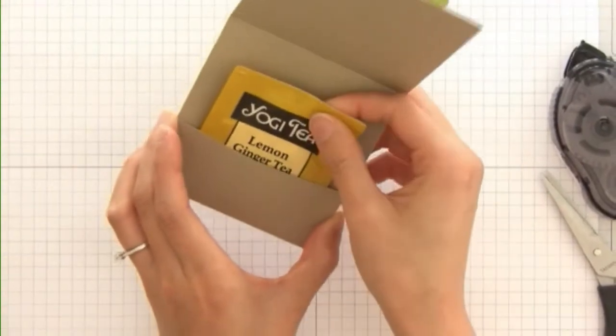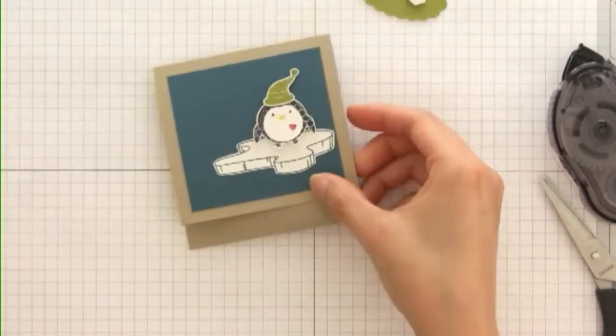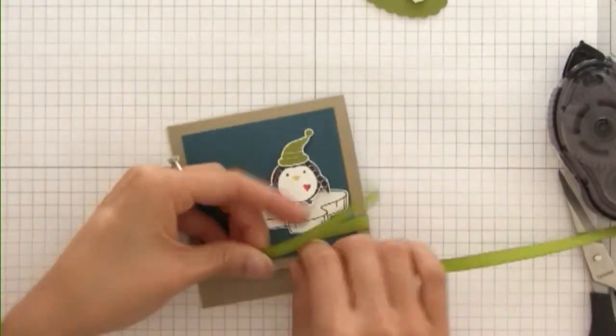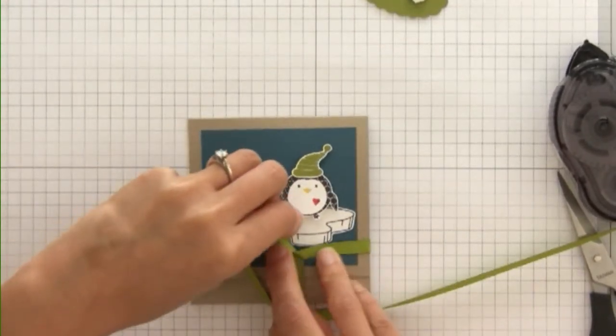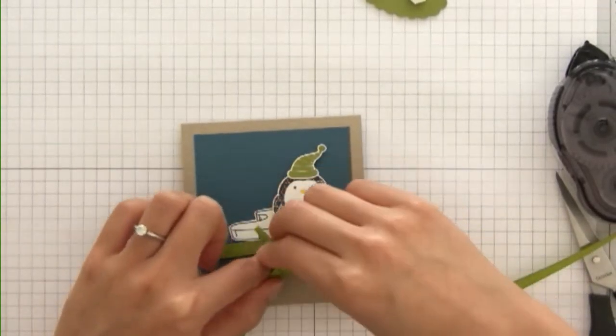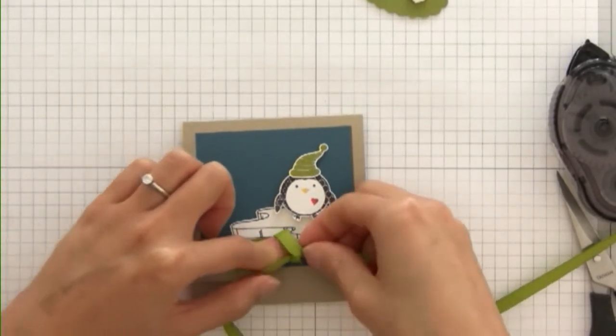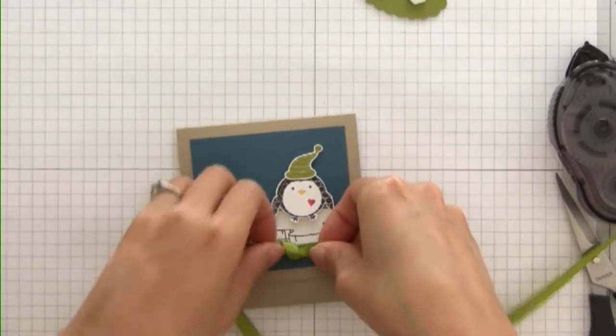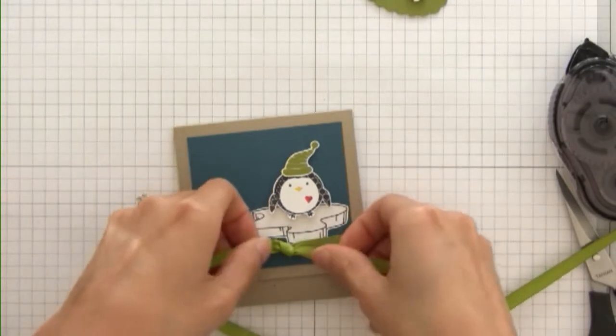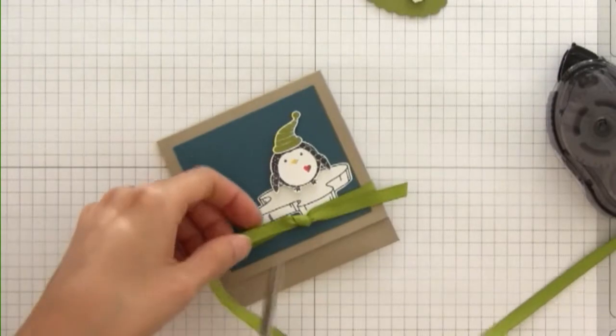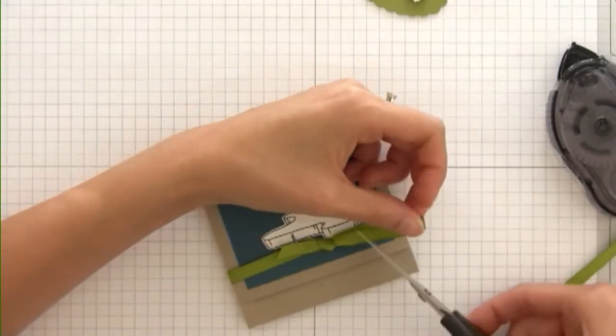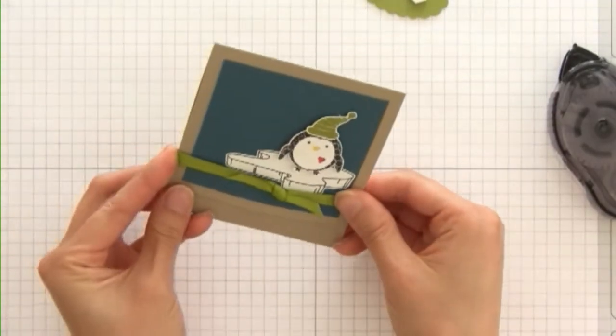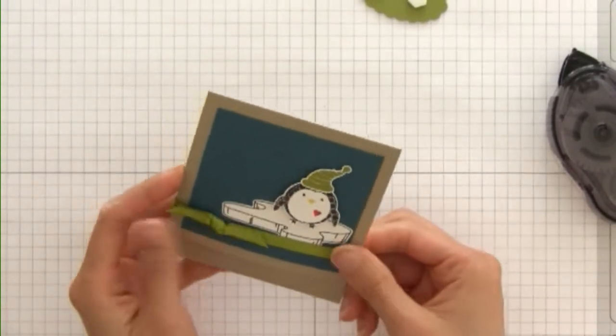Here's the teabag that I had and this fits perfectly inside so you can close it like that. I'm going to use that in there while I tie my ribbon around so that I can accommodate for that extra depth. I'm just going to tie some ribbon and this is Old Olive ¼ inch grosgrain ribbon.